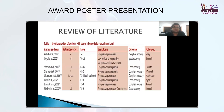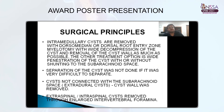This is a review of literature on spinal intramedullary arachnoid cysts, which are very rare in nature with very few cases in the literature. Surgical principles: intramedullary cysts are removed with a dorsal median or dorsal root entry zone myelotomy with wide decompression and removal of the cyst wall as much as possible. Another option is wide fenestration with or without shunting of the subarachnoid space. Separation of the cyst wall was not done if very difficult. For extradural cysts not connected to the subarachnoid space, the cyst wall was removed, and extraspinal cysts were removed through an enlarged intervertebral foramen.